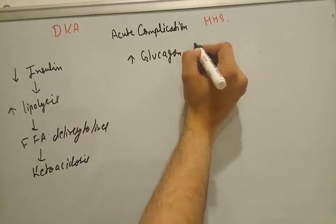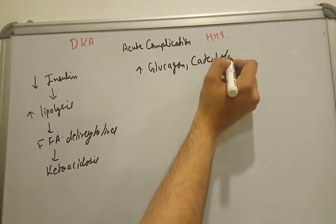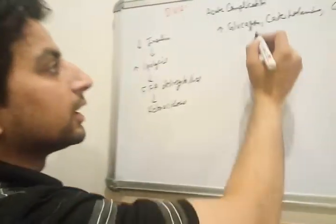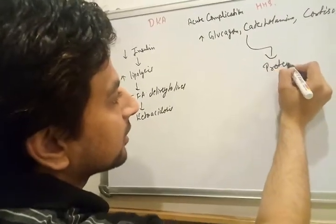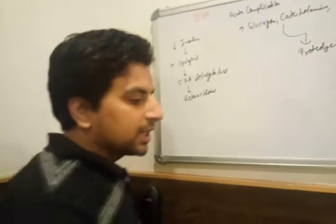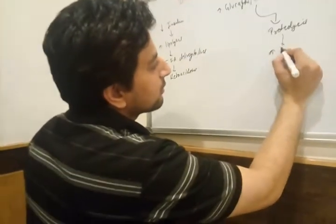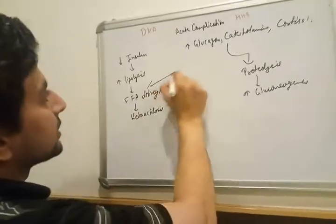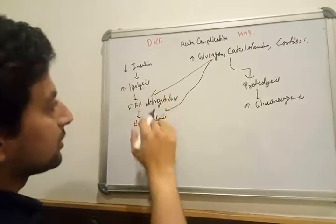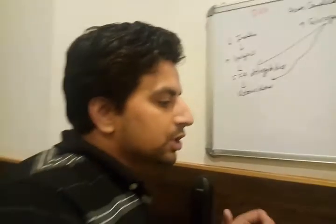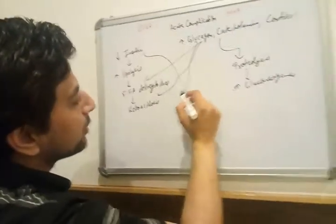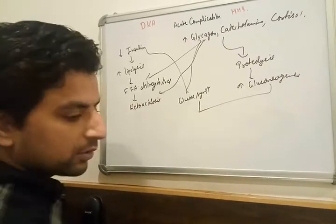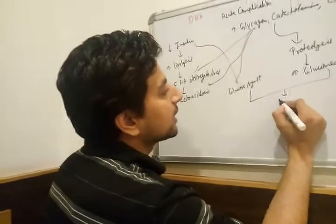Additionally, counter-regulatory hormones increase — glucagon, catecholamines, and cortisol all rise. These hormones cause proteolysis and lipolysis, meaning proteins and lipids break down. This increases gluconeogenesis (new glucose synthesis). The fatty acids also go to the liver and produce ketones. Combined, these processes significantly increase glucose synthesis.